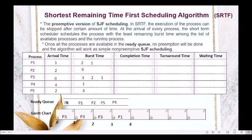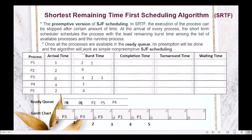We allocate the CPU still to P1. In the Gantt chart, P1 executes from 4 to 5. P1 is done with its execution. Since all processes are already in the ready queue, no preemption will be done anymore and the algorithm works as simple non-preemptive SJF scheduling.